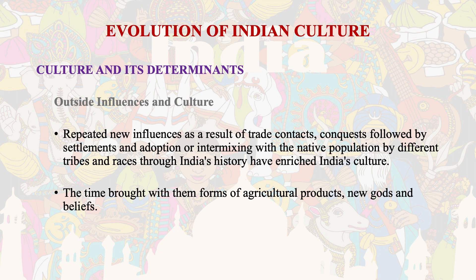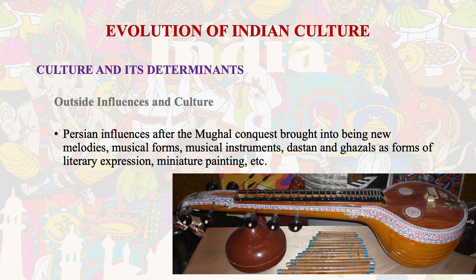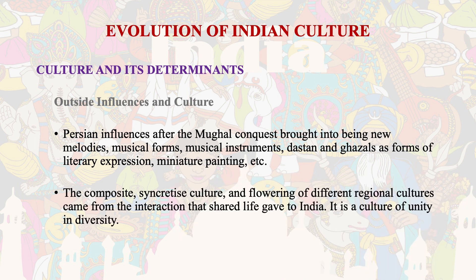We have taken much from the outside world and given much to it. Our entire scientific and technological heritage is a shared heritage. The tribes that came brought with them forms of agricultural products and new gods and beliefs. With Turkish conquest came gunpowder, cavalry and new techniques. Stitched cloth, arches, paper, glass-making techniques and the water wheel are some elements of civilization which came from outside. Persian influences after the Mughal conquest brought into being new melodies, musical forms, musical instruments, Dastaan and Ghazals as forms of literary expression, miniature paintings, etc. The composite syncretized culture and flowering of different regional cultures came from the interaction of that shared life — it is a culture of unity in diversity.